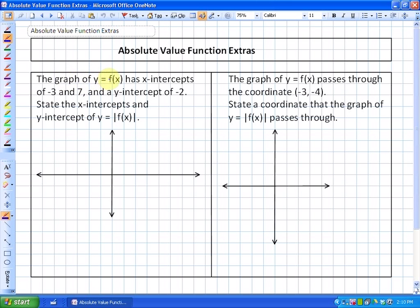It says the graph of y = f(x) has x-intercepts of -3 and 7, and a y-intercept of -2. State the x-intercepts and y-intercept of y = |f(x)|. So what this is saying is that the typical function, or the non-absolute value function,